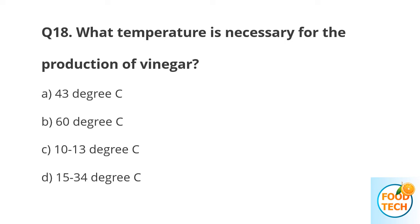Question 18. What is the temperature necessary for the production of vinegar? A. 43°C. B. 60°C. C. 10 to 30°C. D. 50 to 34°C.